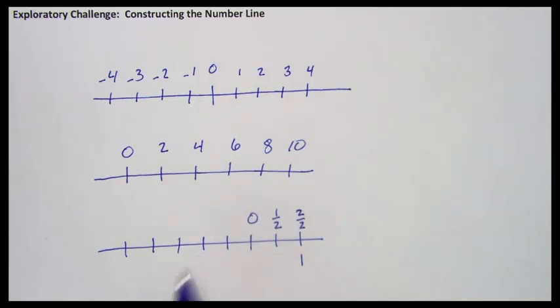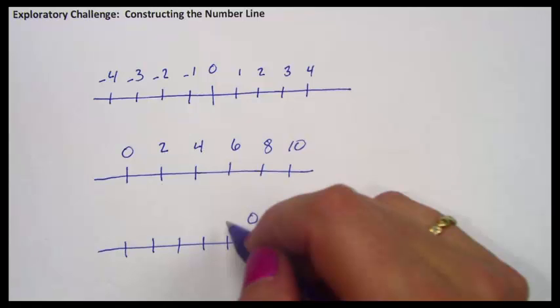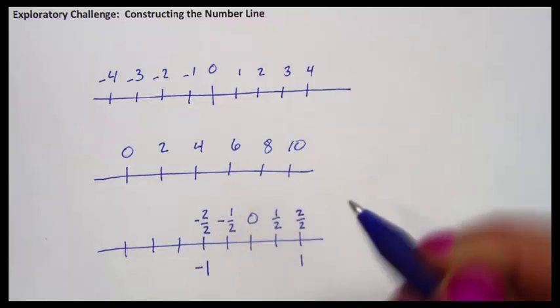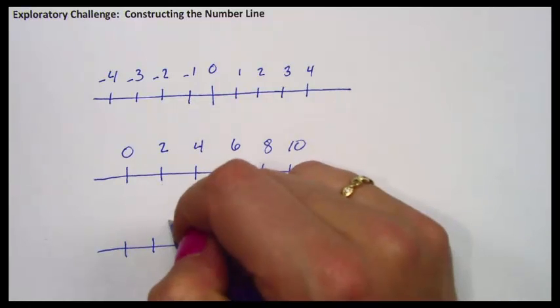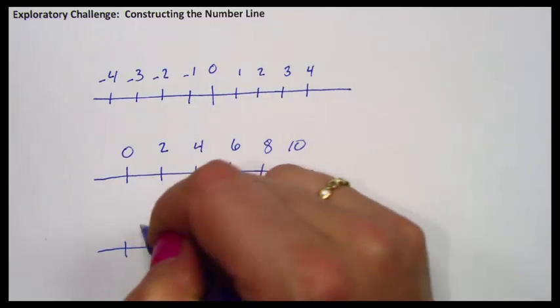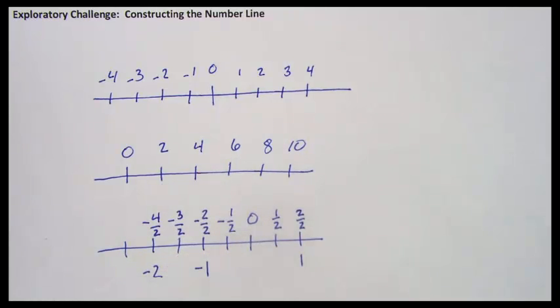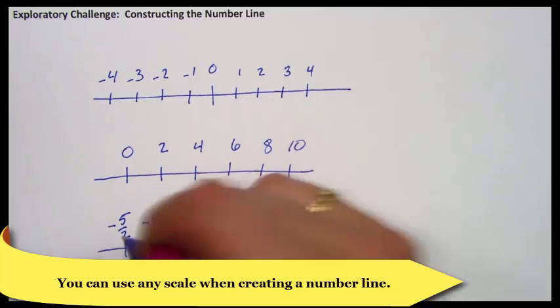On the other side of zero, going to the left, negative one half, negative two halves, which is the same as negative one, negative three halves, negative four halves, which is the same as negative two, negative five halves, and so on.